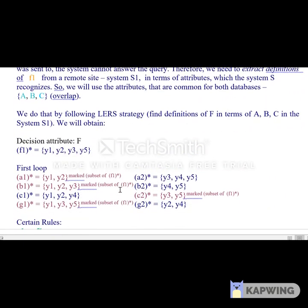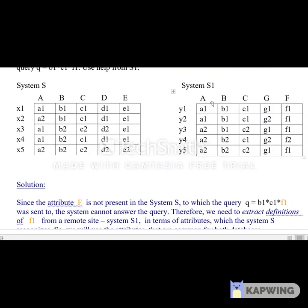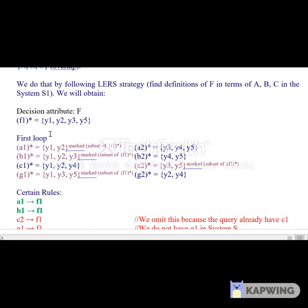Then we also find the objects that satisfy each of the attributes in that particular system. For example, if we take A, we have A1 and A2 attributes. We find the objects that satisfy A1, which is Y1 and Y2, and A2 is Y3, Y4, Y5. Here we have returned the sets, and similarly we need to find for B1, C1, B2, C2, G1, G2, and then we mark if that particular set is a subset of this F1 set.